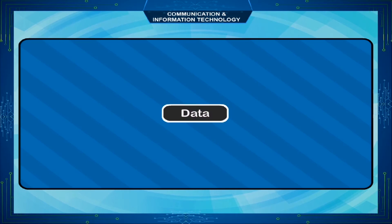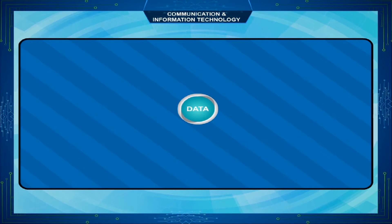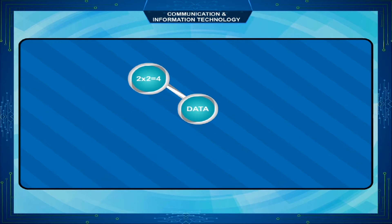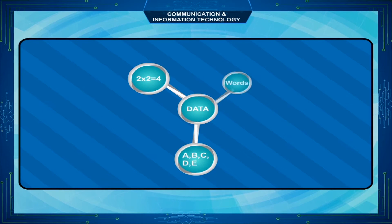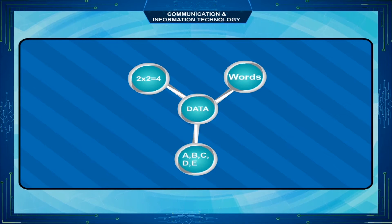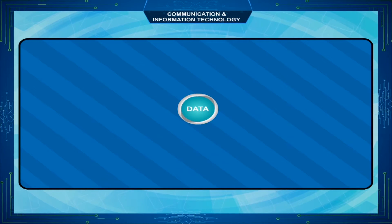Data. Data is raw facts or figures that we give as input. It is in the form of numbers, letters, or words. Data does not tell much about a thing.